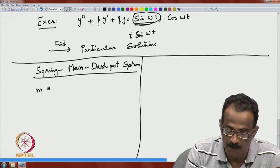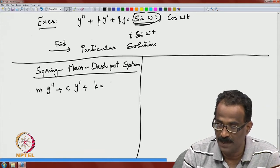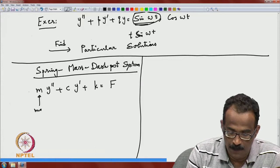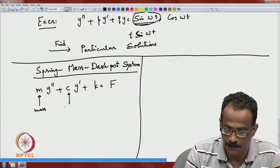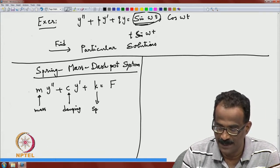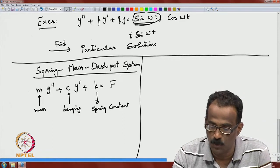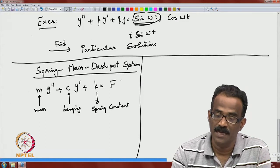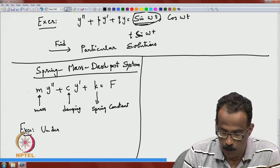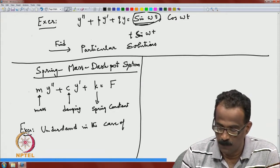The spring-mass system equation is: m·y'' + c·y' + k·y = f, where f is some external force. Here m is the mass, c is the damping coefficient, and k is the spring constant. As an exercise, understand this equation also in the case of an RLC circuit, because it is the same equation.